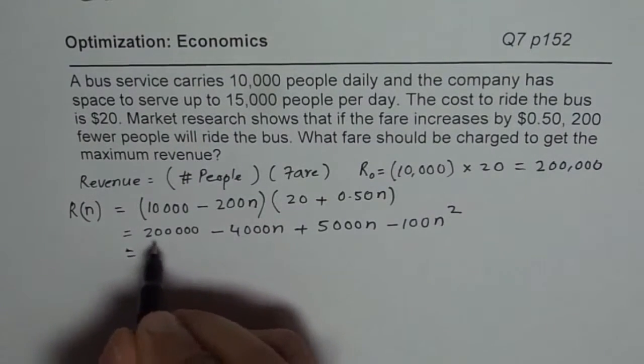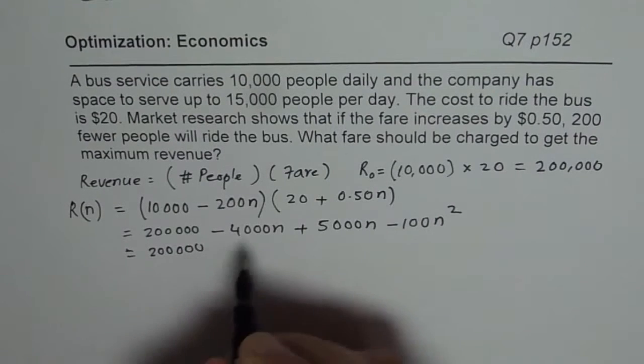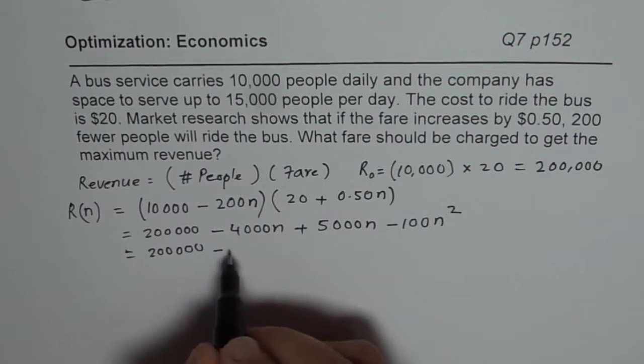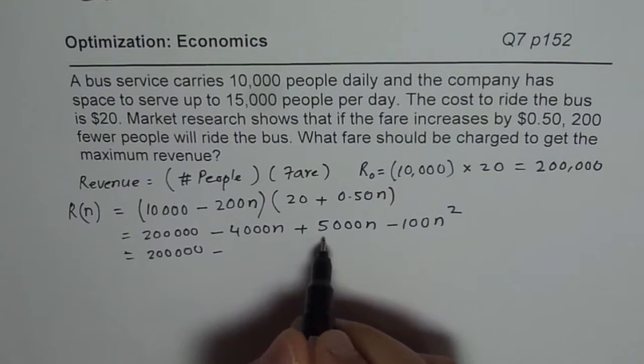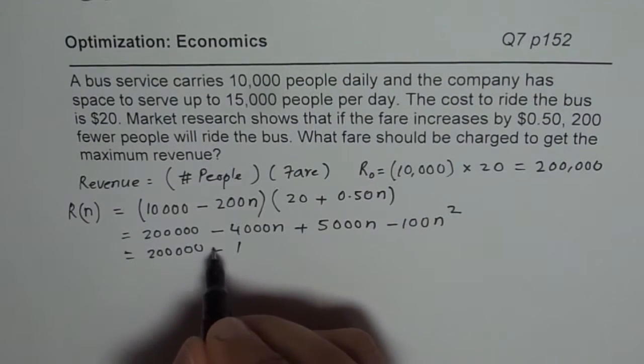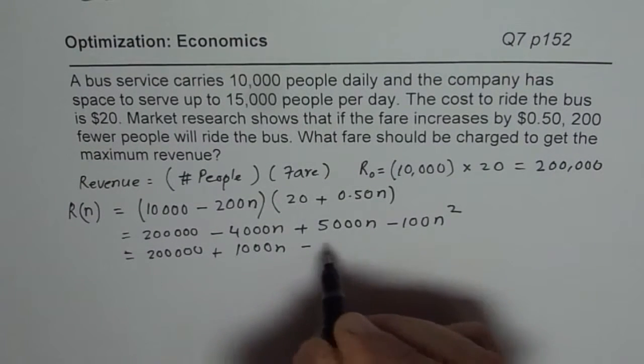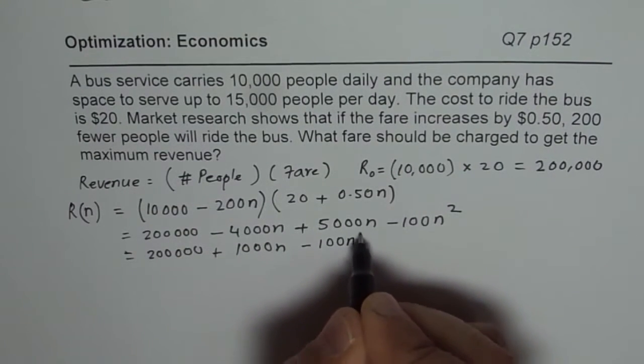Which you could combine these terms and then write this as 200,000, and minus, this is 4,000 plus 5,000, so it is 1,000 with positive sign, minus 100N squared.